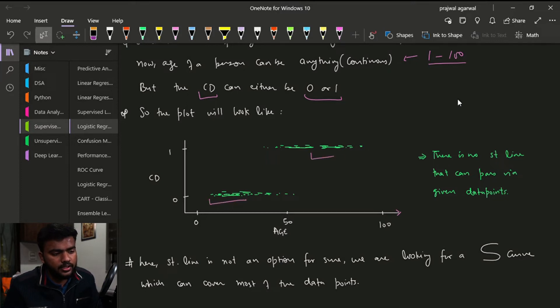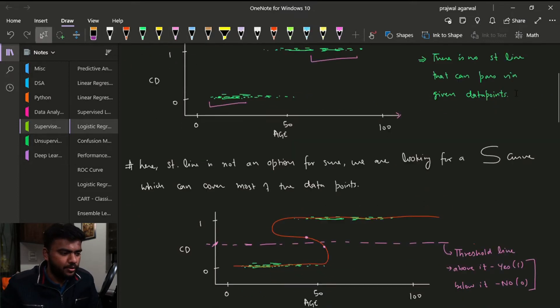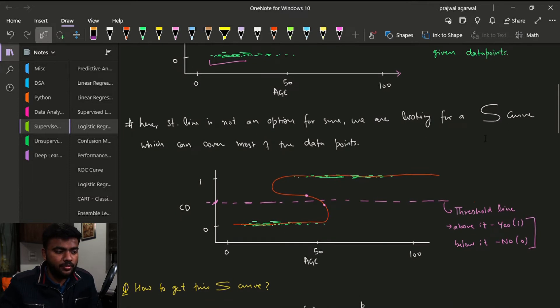So there is no straight line that can pass. Yeah, so it's very clear that if we are performing a linear regression, then linear regression just generates a straight line, right? And there is no possible straight line that can pass through all the data points. Hence we need a different solution. So here the straight line is not an option.